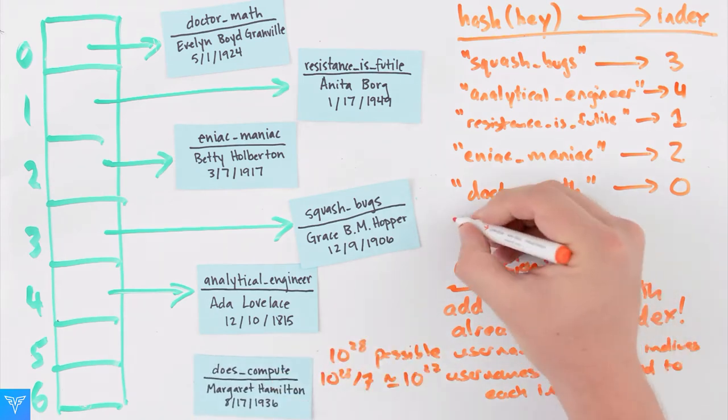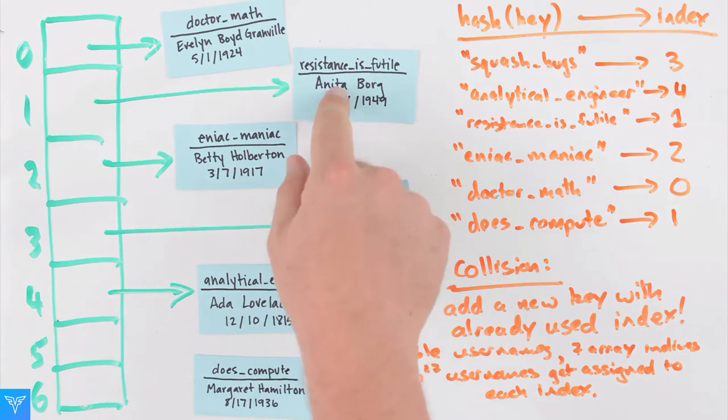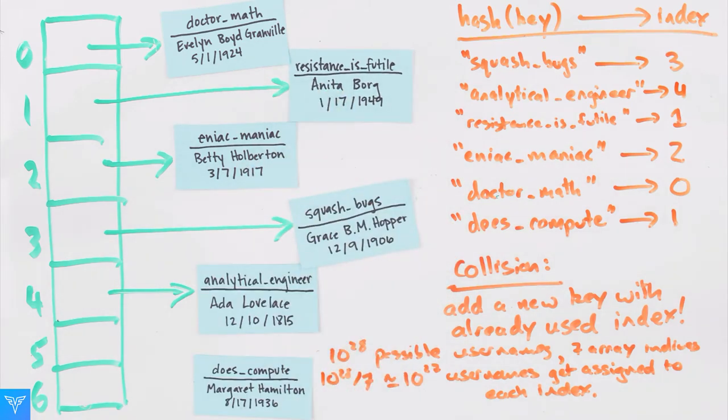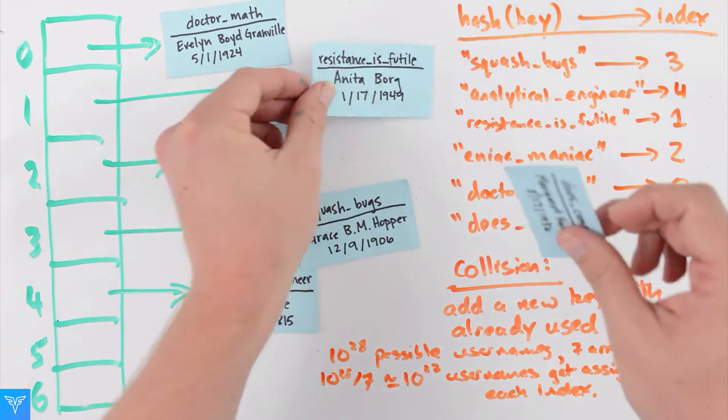The first method is called chaining. We have a new user, does compute, and the hash for this user is 1. This gives us a problem because resistance is futile is already at index 1. We don't want to delete a user, so we're left with the question of what to do.